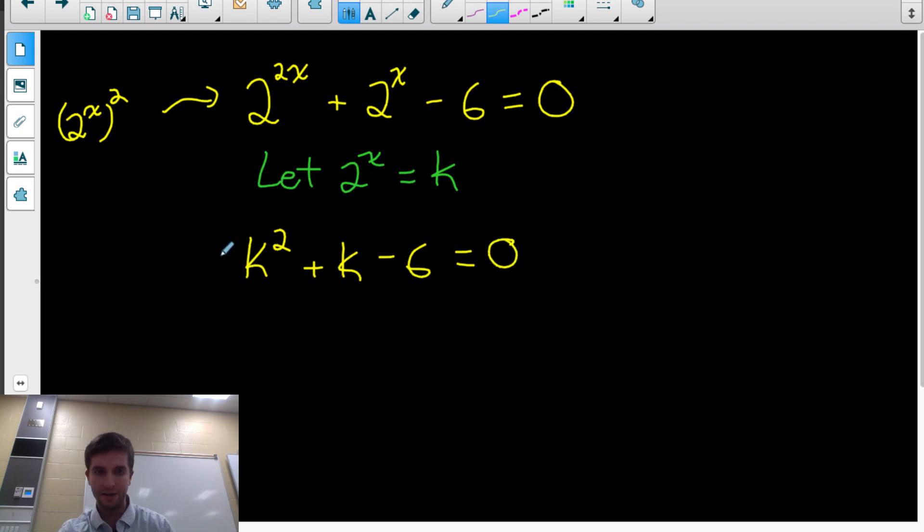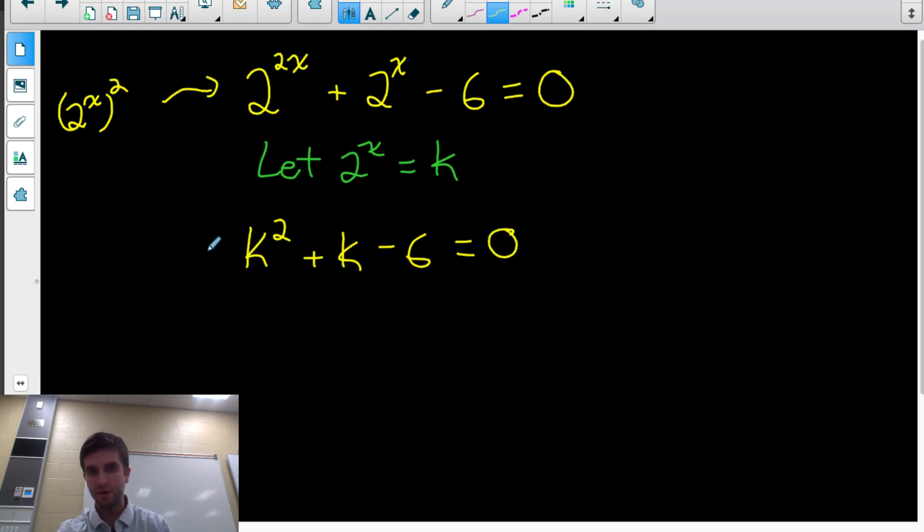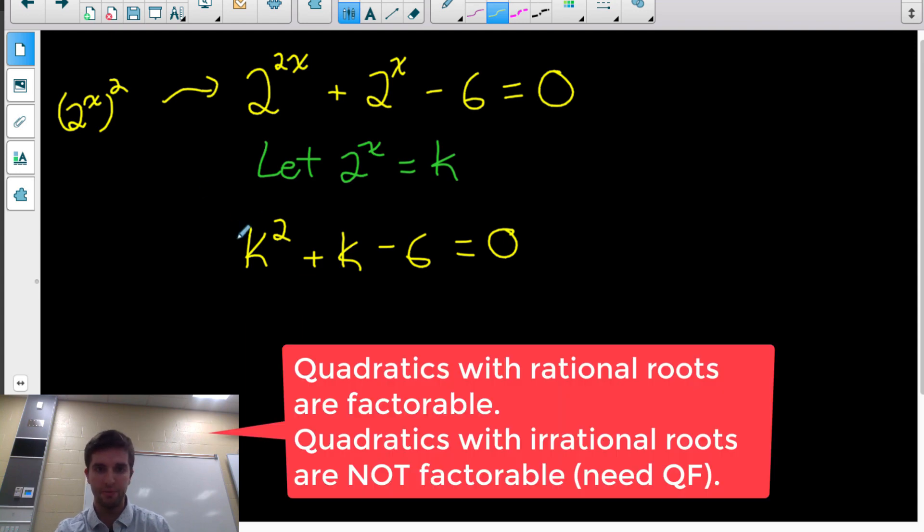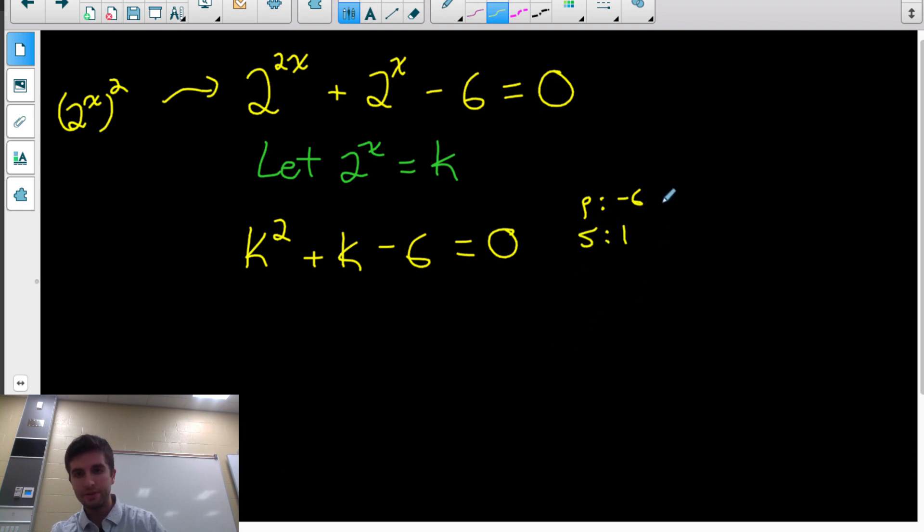Now that's more obviously a quadratic, and you know how to solve quadratics. If they have rational roots, it'll be factorable. If it doesn't have rational roots, we'll have to use quadratic formula. But for this one, is it factorable? Well, do numbers multiply to negative 6 and add to 1? Yep, they do. It's 3 and negative 2.